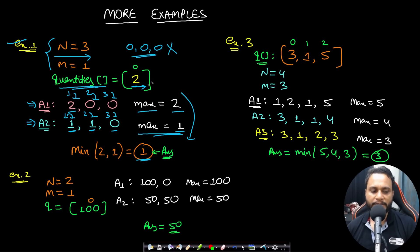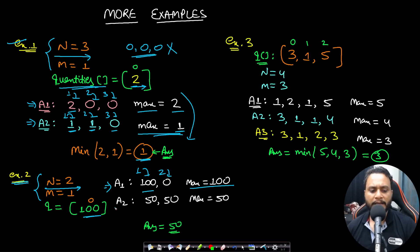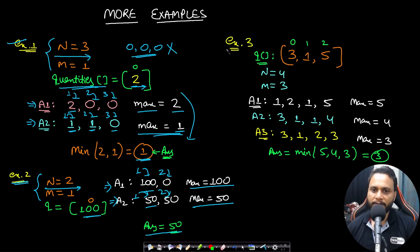In example 2, n equals 2 and m equals 1 with a single product type of 100 units. Dividing it as 100 and 0 gives max value 100. Dividing it as 50 and 50 gives max value 50. No other balanced split gives a lower maximum, so the answer is 50.